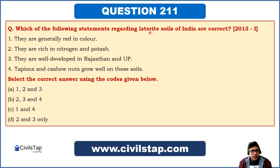The first question is: which of the following statements regarding laterite soils of India are correct? We have four statements: 1) They are generally red in colour; 2) They are rich in nitrogen and potash; 3) They are well developed in Rajasthan and Uttar Pradesh; 4) Tapioca and cashew nuts grow well on these soils.